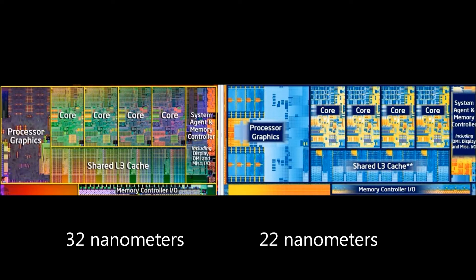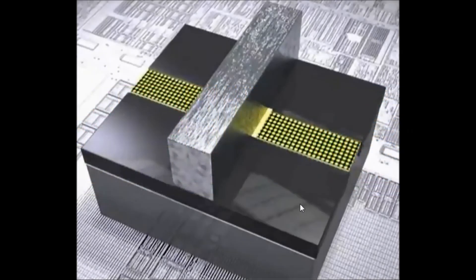That leaves shrinking the transistor, and that is exactly what is so special about Ivy Bridge. The transistors in Ivy Bridge are 30% smaller than the transistors in Sandy Bridge, and, as we are going to show in this video produced by Intel, this is where the real technological breakthrough is. This is a single Sandy Bridge transistor. A transistor is really the same as a switch. These yellow dots over here represent the current flow when the switch is closed.